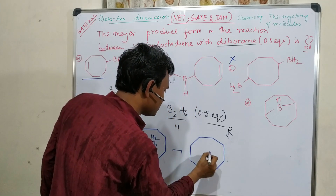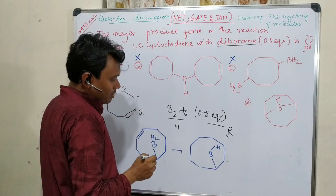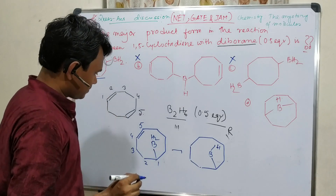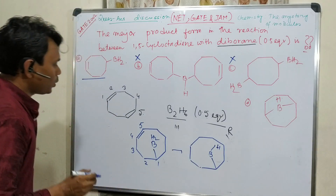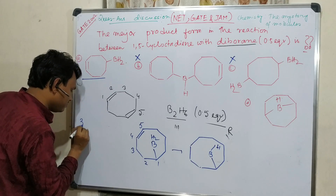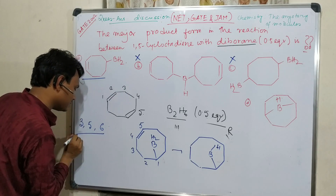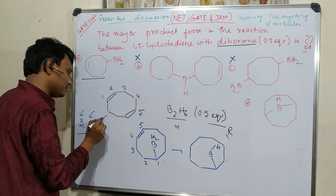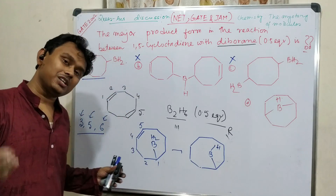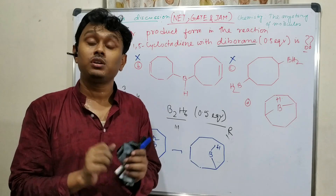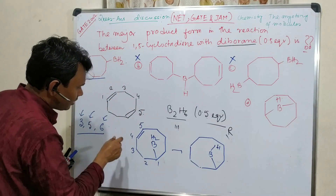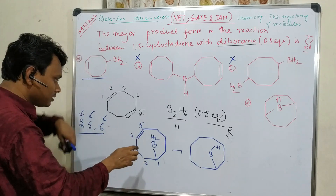Here we have started with boron at position 1. Now the question: where will boron be attached? Keep this in mind — 3-membered ring forms more readily than 5-membered, and 5-membered more than 6-membered. It is true that a 3-membered ring has ring strain, but due to proper conformational orientation it will still form. Even in neighboring group participation, 3-membered rings play a major role. So right now a 1,5-interaction is possible, but 1,6 is not directly possible.